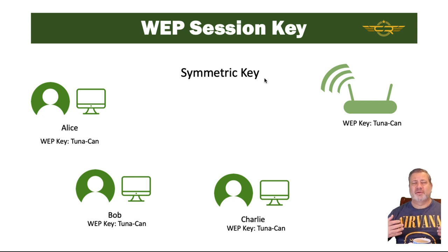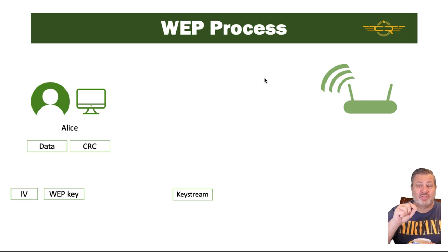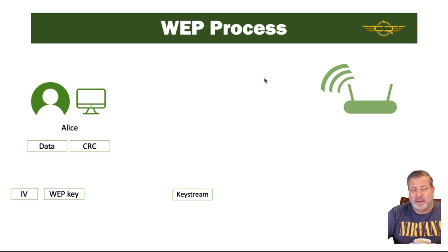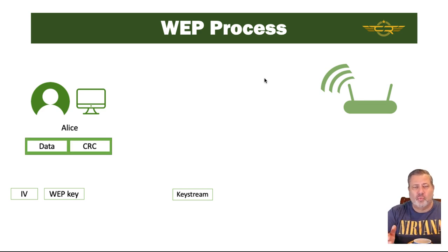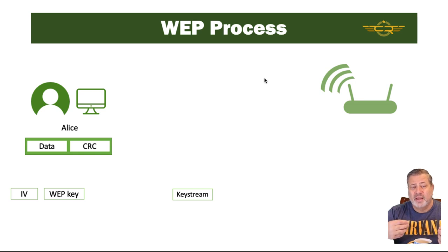Let's look at how the IV works. Alice sends a data packet with a CRC — cyclic redundancy check — a mathematical function that verifies the data is correct on the other end. That data and CRC are packaged together. On the wireless side, we have the WEP key — in this case 'Tunican' — and an initialization vector that provides something equivalent to salting, adding value so the key doesn't look the same every time it crosses the network.